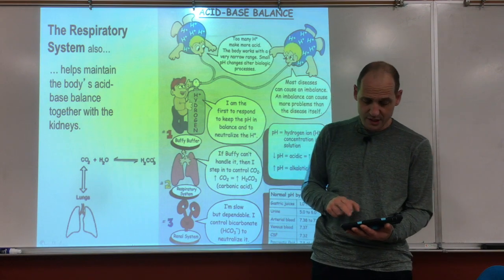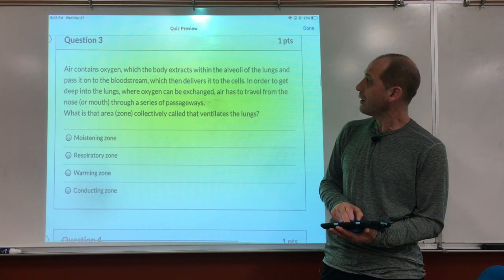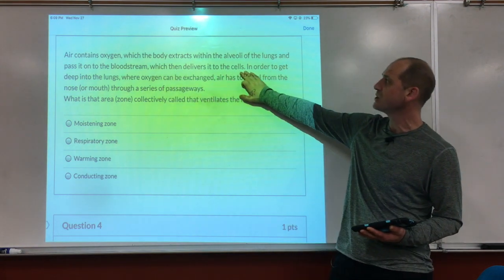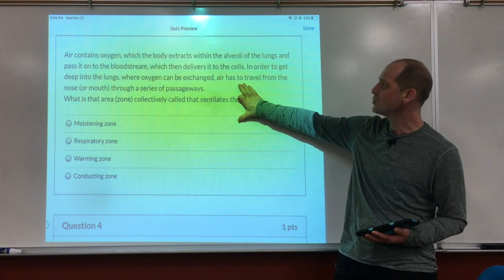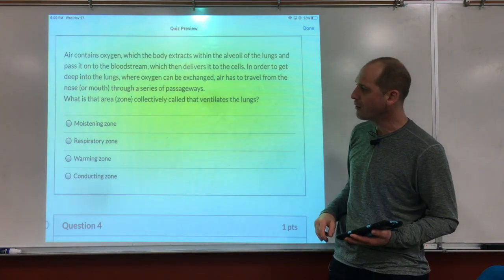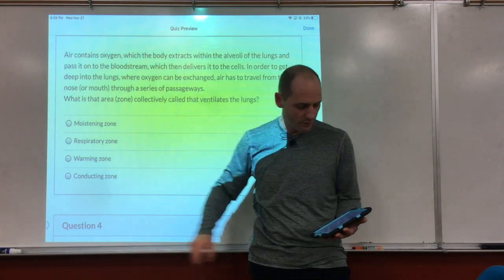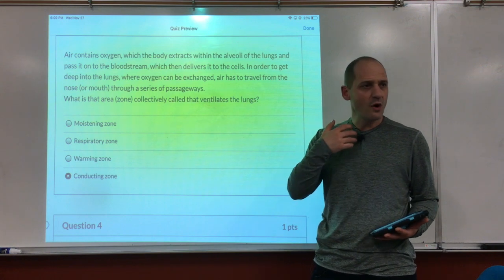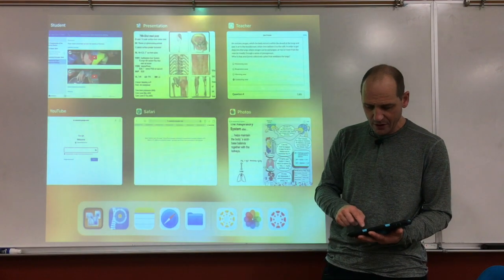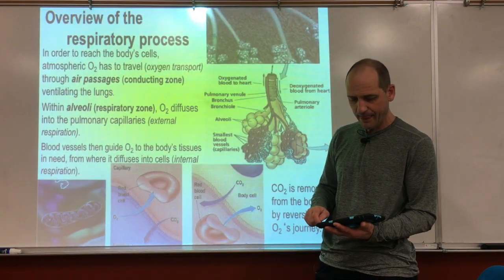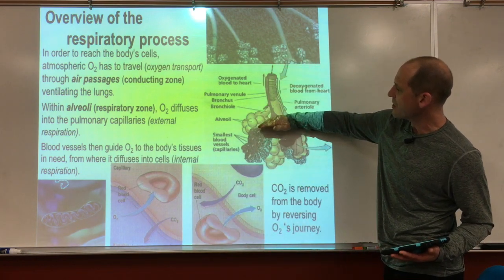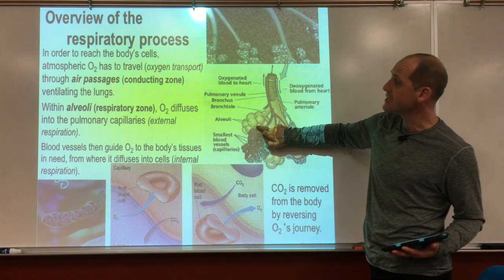Acidity is important — and that's drinking water. Air contains oxygen which the body extracts within the alveoli of the lungs, then passes it to the bloodstream, which delivers it to the cells. To get deep into the lungs where oxygen can be exchanged, air travels from the nose or mouth through a series of passages. The area collectively called that ventilates the lung is the conducting zone — an area with no gas exchange that just conducts air to where exchange happens.